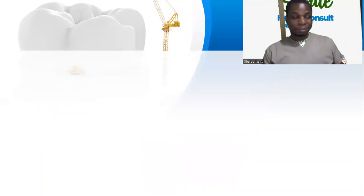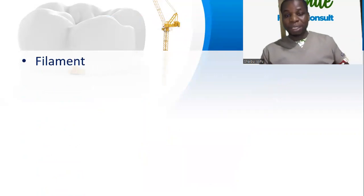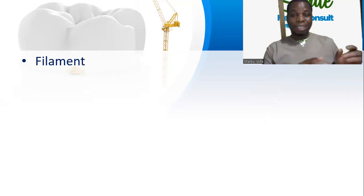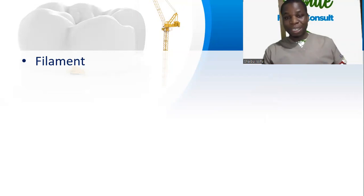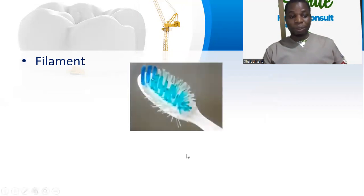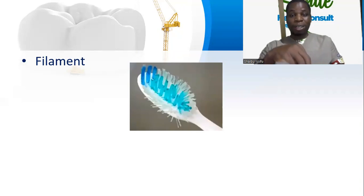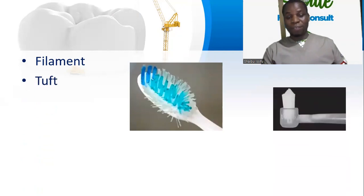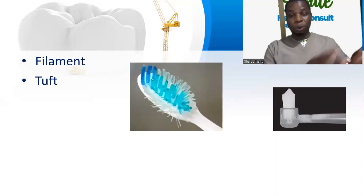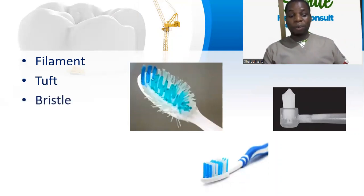Now we are going to give a brief description. The toothbrush has a handle, it has the neck that joins, and then the head. The neck joins the head to the handle. The head has the bristles — the part we use in brushing the teeth. If you pick just one of those bristle strands, we call it a filament. Filaments are usually put in groups on the head. When we put them in a group — a bundle — we call it a tuft. The tufts are put in rows, and all the rows together form what we call the bristle.